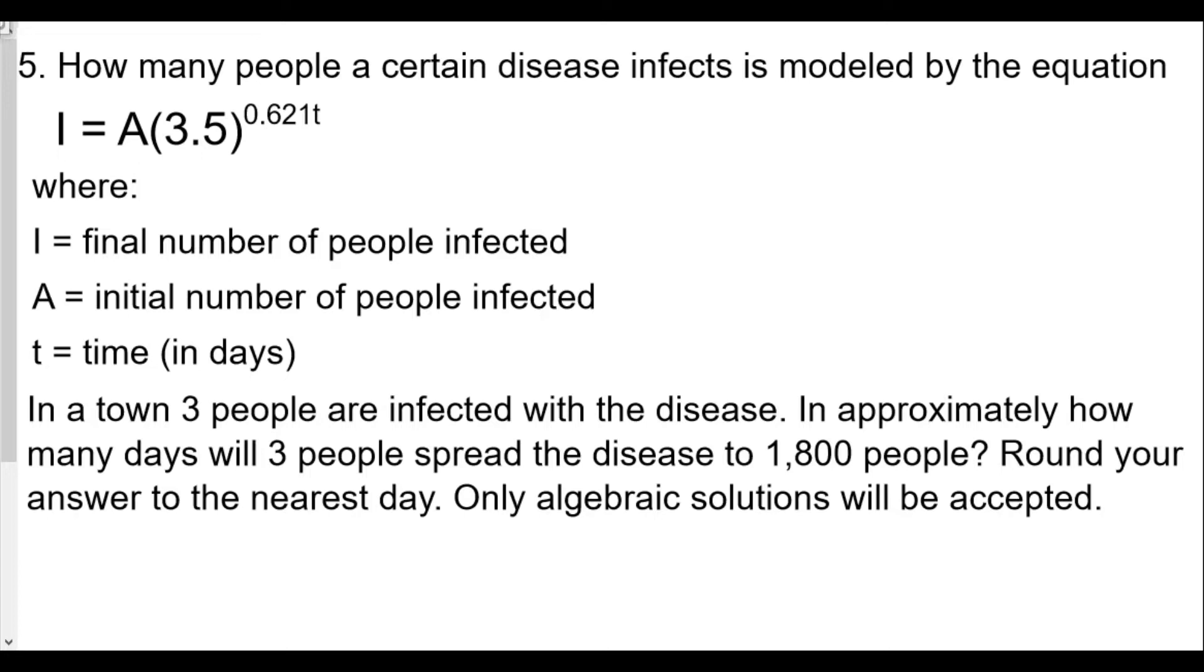All right, ladies and gentlemen, question number five: How many people a certain disease infects is modeled by the equation I = A(3.5)^(0.621t), where I equals the final number of people affected, A equals initial number of people affected, t is time in days. In a town, three people are infected with the disease. In approximately how many days will three people spread the disease to 1,800 people? Round your answer to the nearest day. Only algebraic solutions will be accepted, and we'll be using log base 10 for our questions.